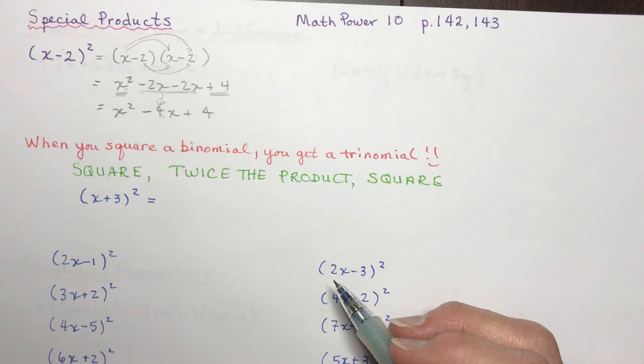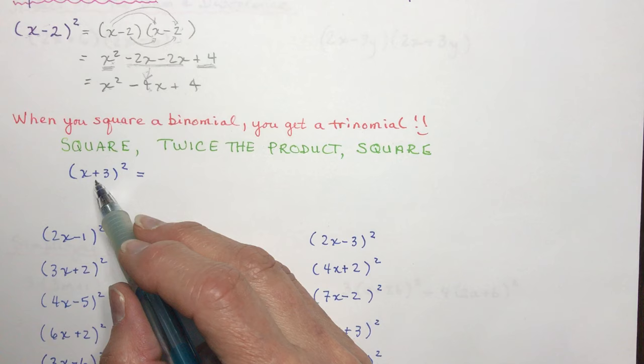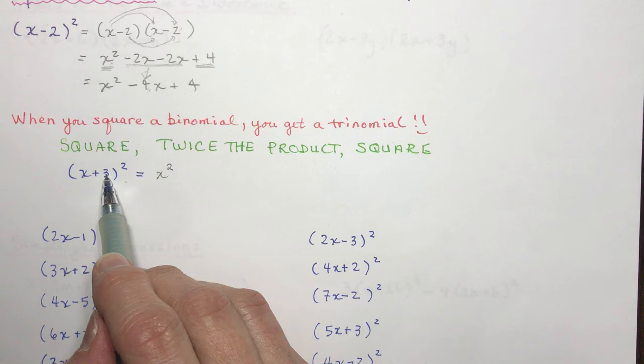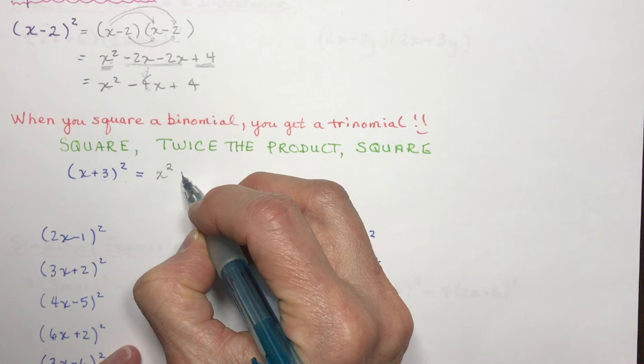Let's try (x + 3) squared. Square the first term: x times x is x squared. The product of x and +3 is 3x, twice that is 6x. And square the last term: 3 squared is 9. So the answer is x squared plus 6x plus 9.